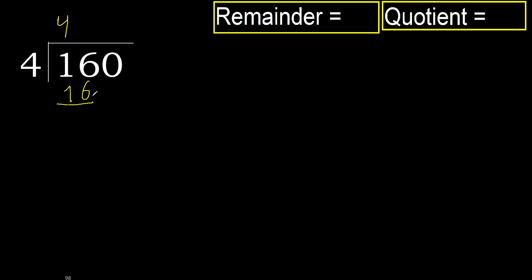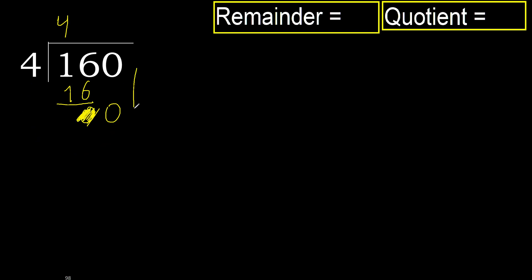Ok. 16 minus 16 is 0. Next. Eliminate the 0 on this side. 0 is less, therefore next.